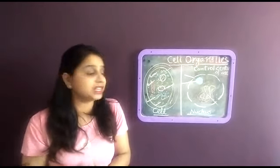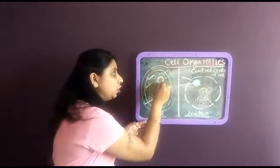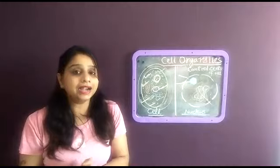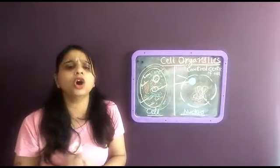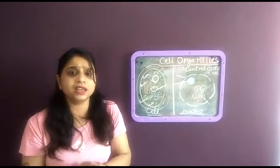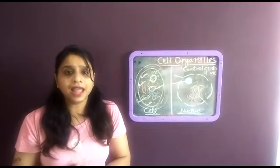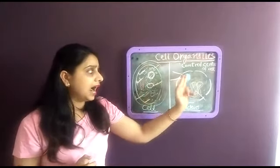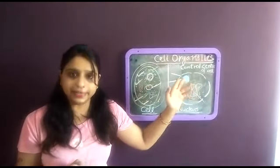And third main difference is the size of vacuole. In plant cells vacuole is very large in size and in animal cells there are very small vacuoles. These are some main differences in the plant and animal cell. Now I would like to start the cell organelles in detail.